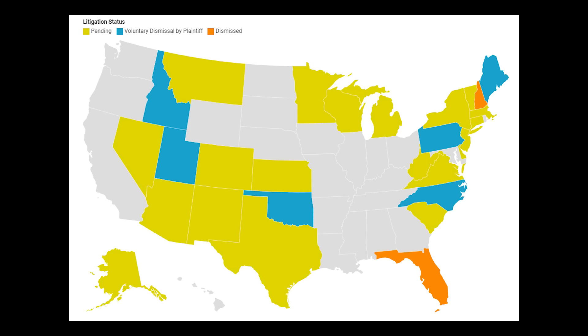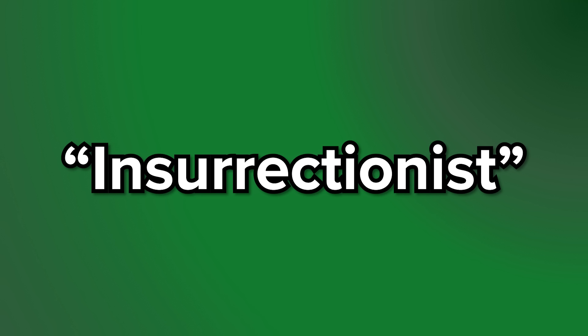That's more than half of the states. Some of them have already been dismissed. The red states were dismissed by the judge, the blue states were dismissed by the plaintiff, and the yellow states on this map are still pending. It is expected that most of these cases will be decided in the next few months in order to leave enough time to print the ballots. All these cases are claiming that Donald Trump is an insurrectionist and is not eligible to run for political office.